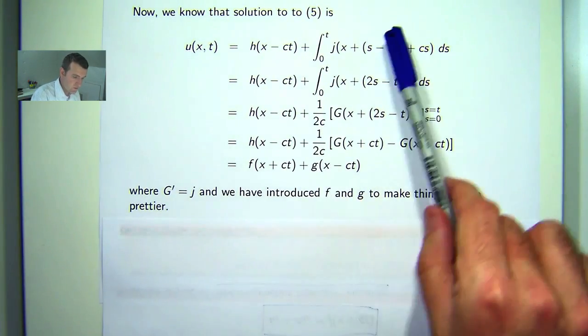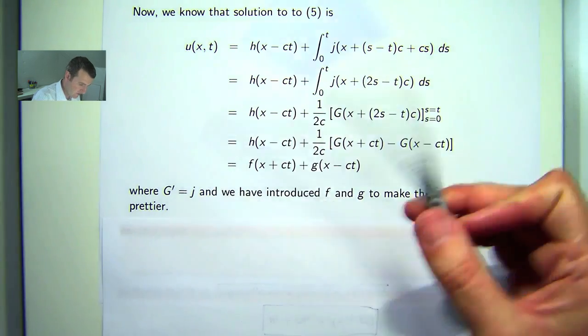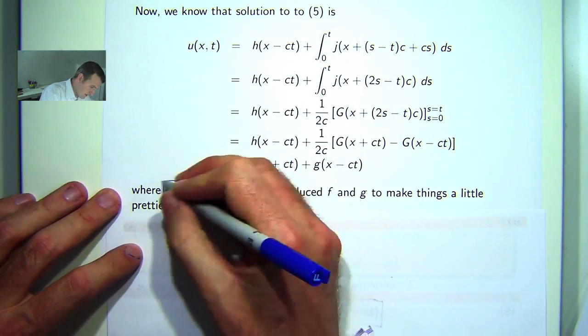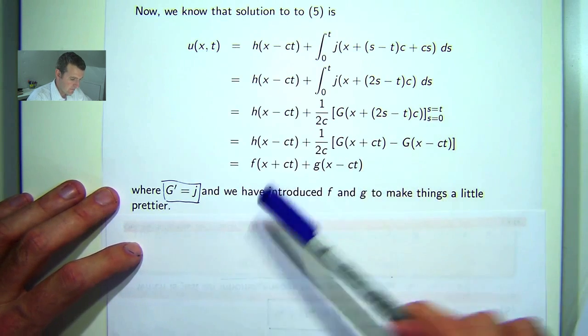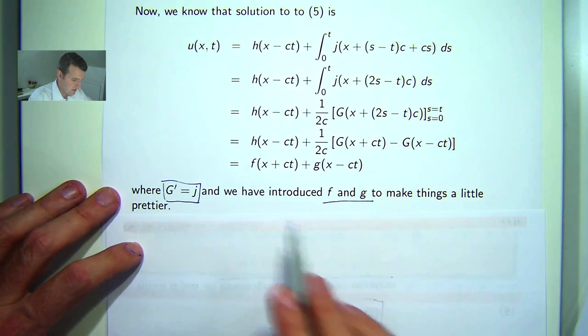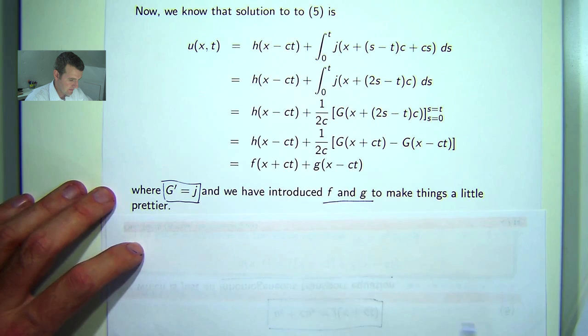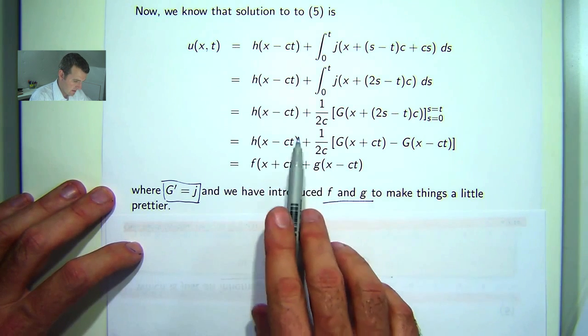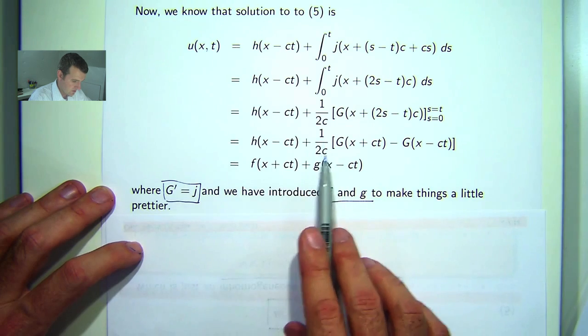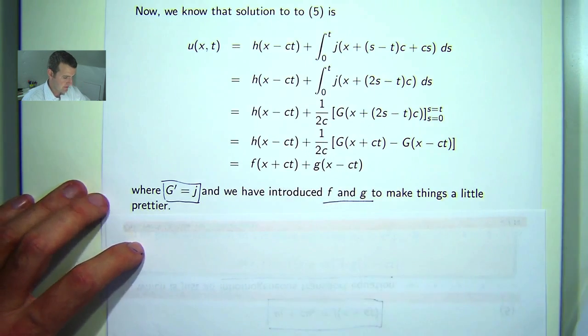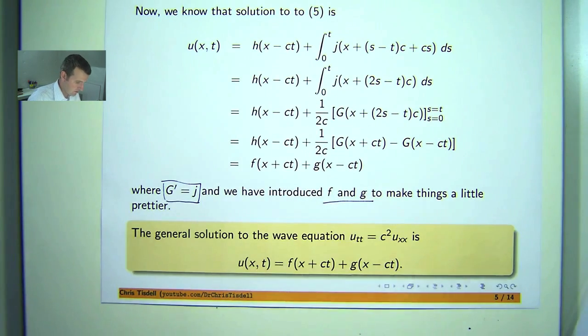So if you go through here, we define big G prime to be little j. And you can sub these in and just introduce some new functions f and g to make things a little prettier. So g would be that minus big G of that on 2c and f would just be 1 on 2c times big G of that.